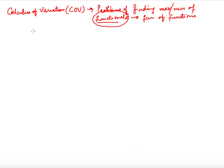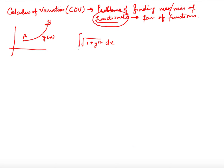We have seen in the last video that when you have two points A and B in the plane and there is some curve joining these two points, suppose this is y(x), then the length of the curve from point A to B is given by the integral from A to B of √(1 + y'²) dx. We want to find a function y(x) such that this value is minimum — we want to find a curve joining A and B along which the distance is minimum. This kind of functional is called a local functional.